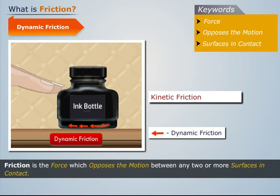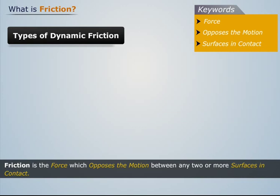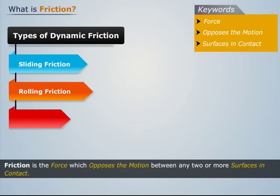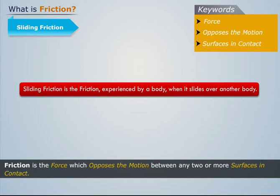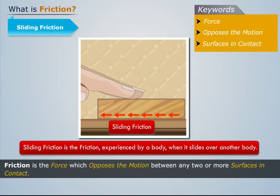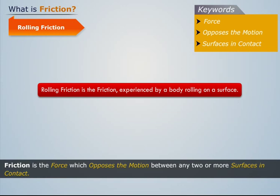Dynamic friction can be of three types: sliding friction, rolling friction, and pivot friction. Sliding friction is the friction experienced by a body when it slides over another body — for example, a block sliding on a surface. Rolling friction is the friction experienced by a body rolling on a surface — for example, a tennis ball rolling on the ground.